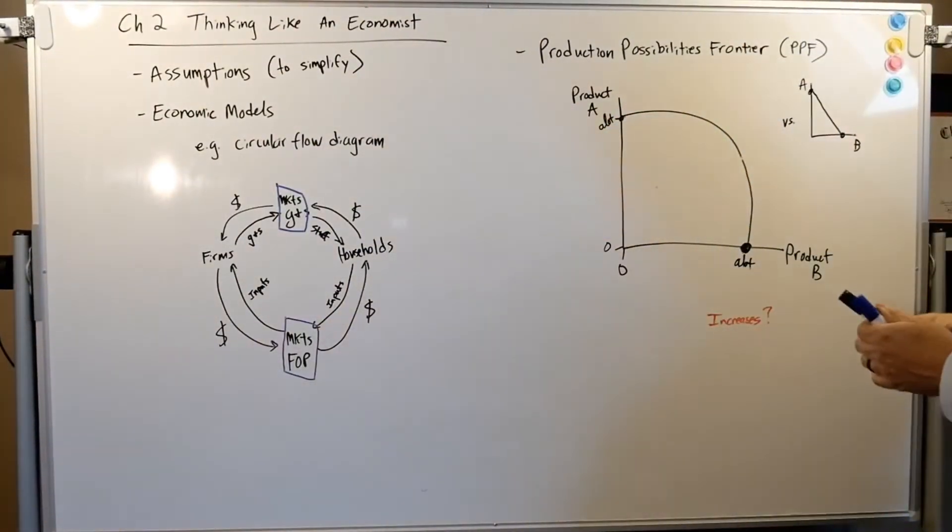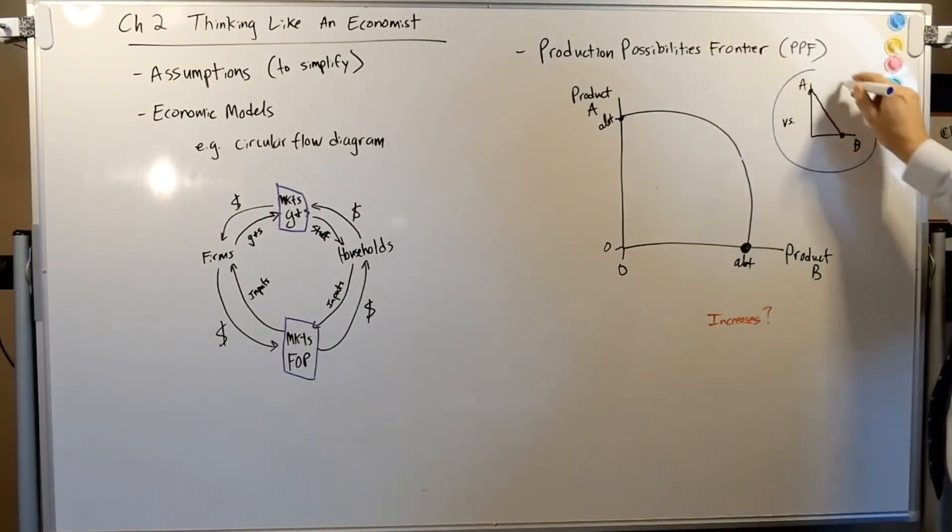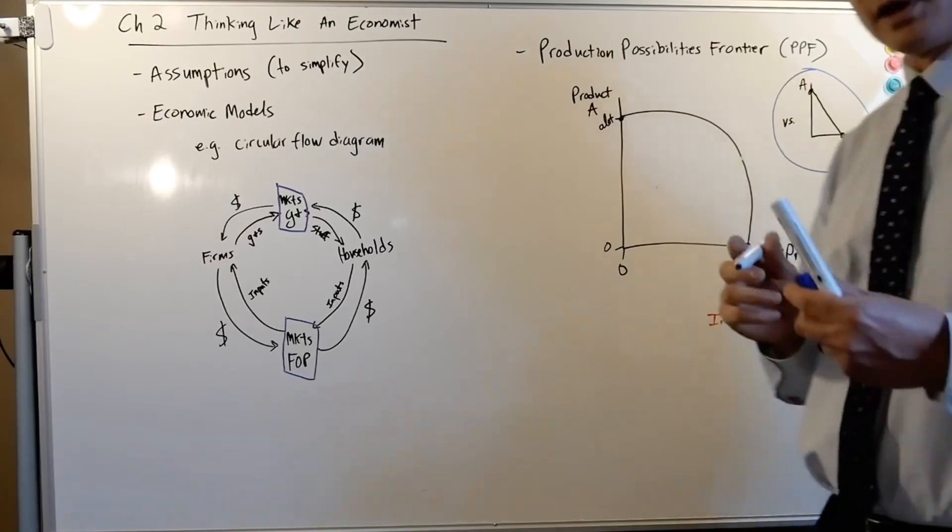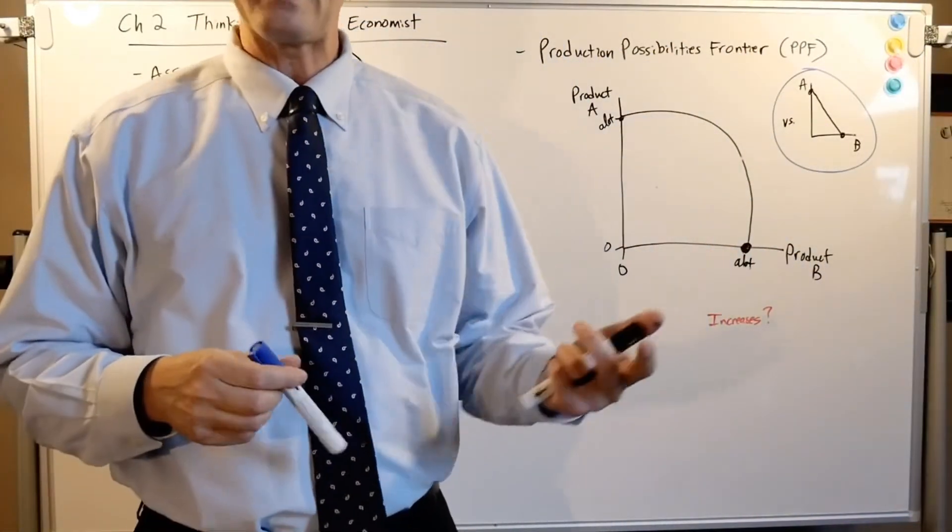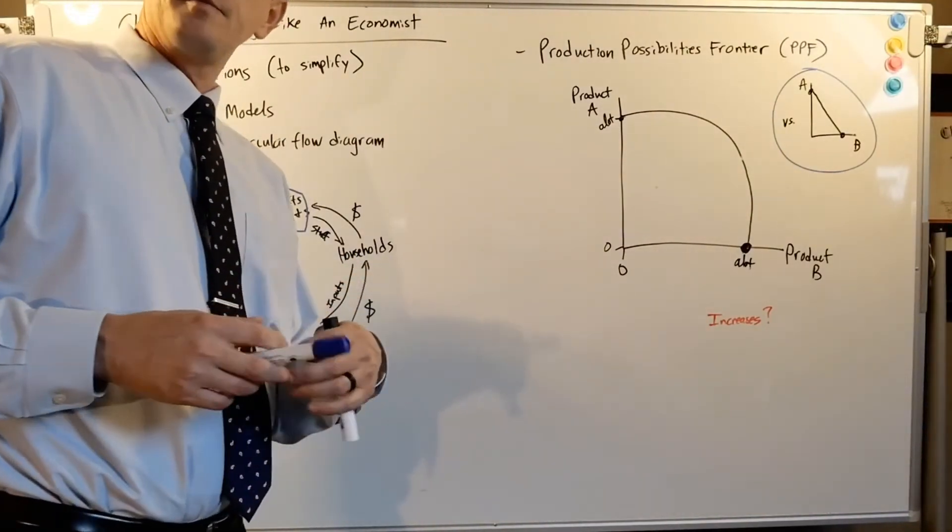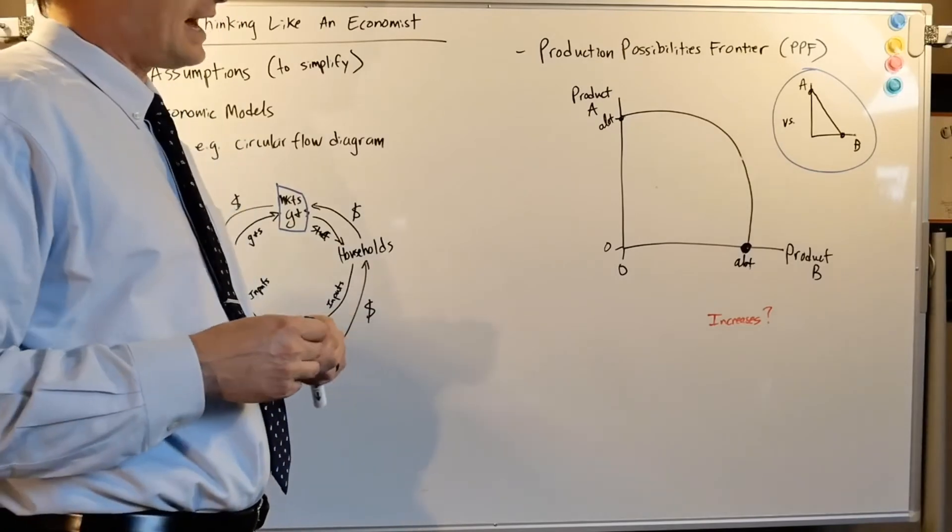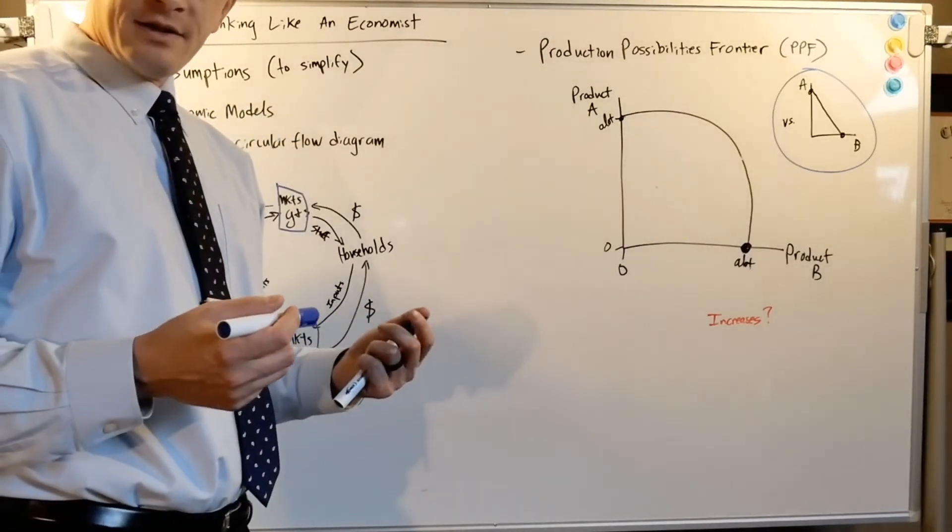So in practice you're going to start this chapter with linear production possibilities frontiers, but it's actually going to start bowing out because human beings are a wonderful thing. We get really good at making something, we can make it faster, so that's why you see the bow in it. Now in the homework you'll see in the initial stuff and some of the reading you're going to see some straight lines, and that's just assuming a linear relationship where no matter what you do you're still at the same ability level. Now what if it increases?